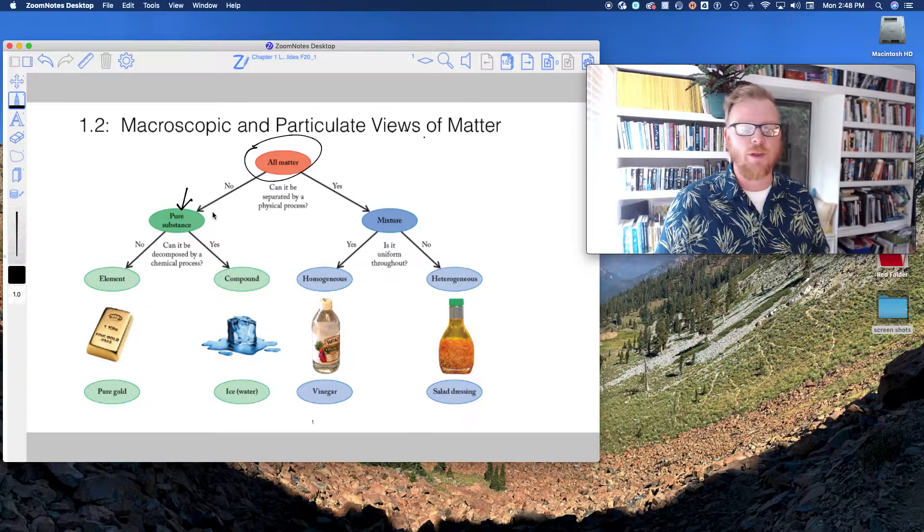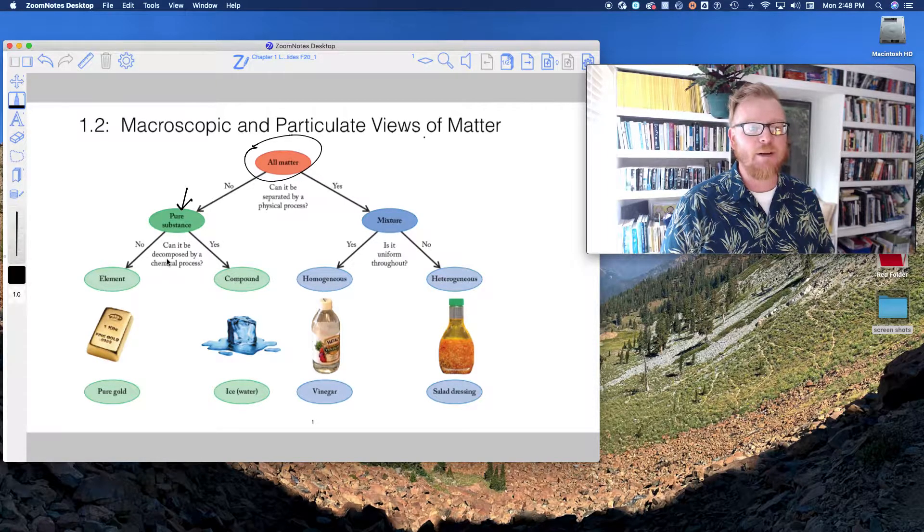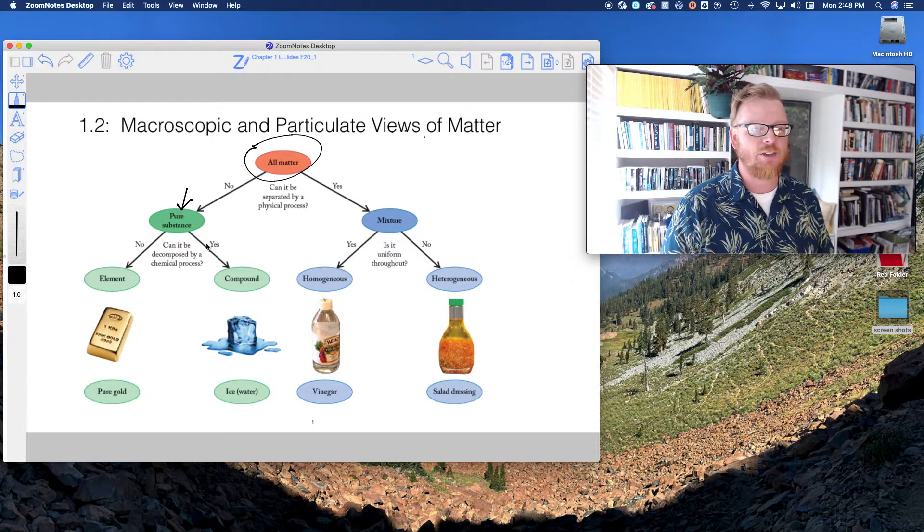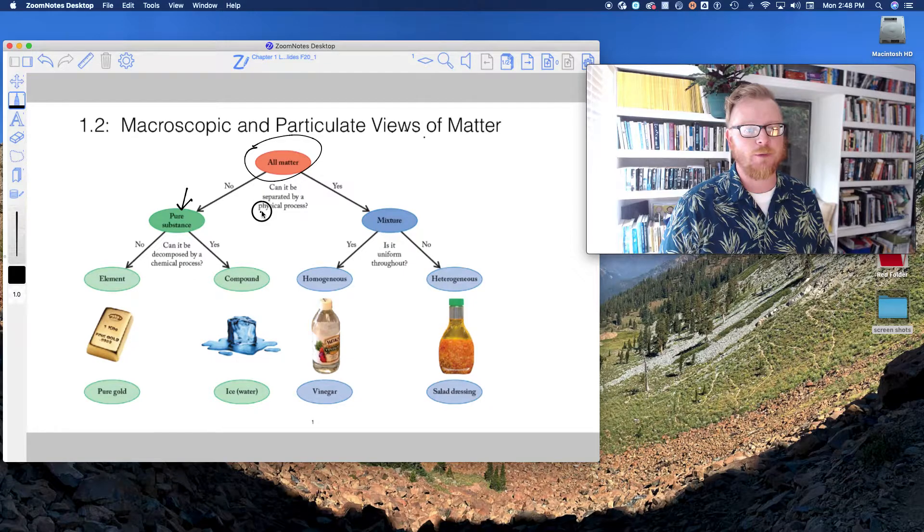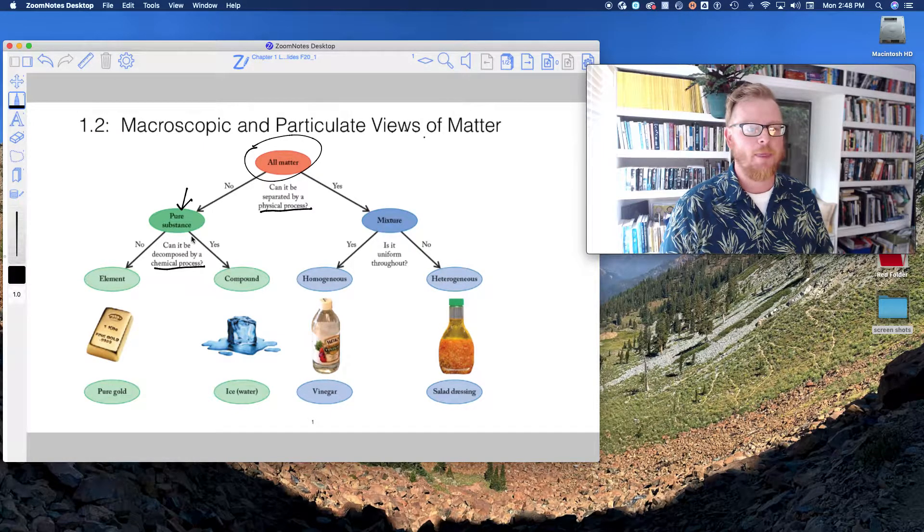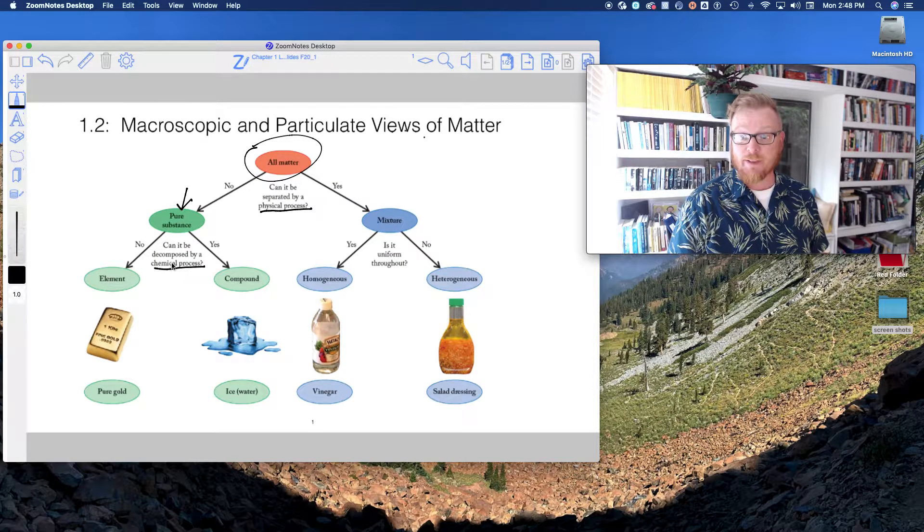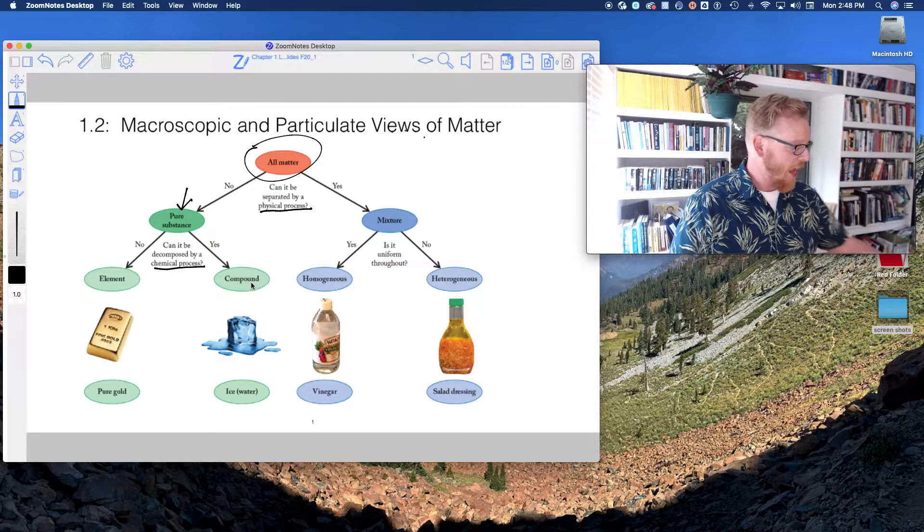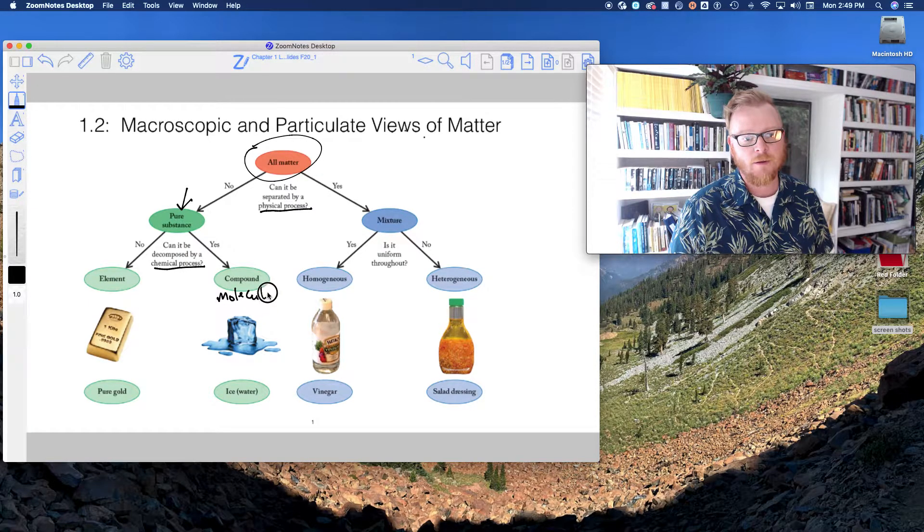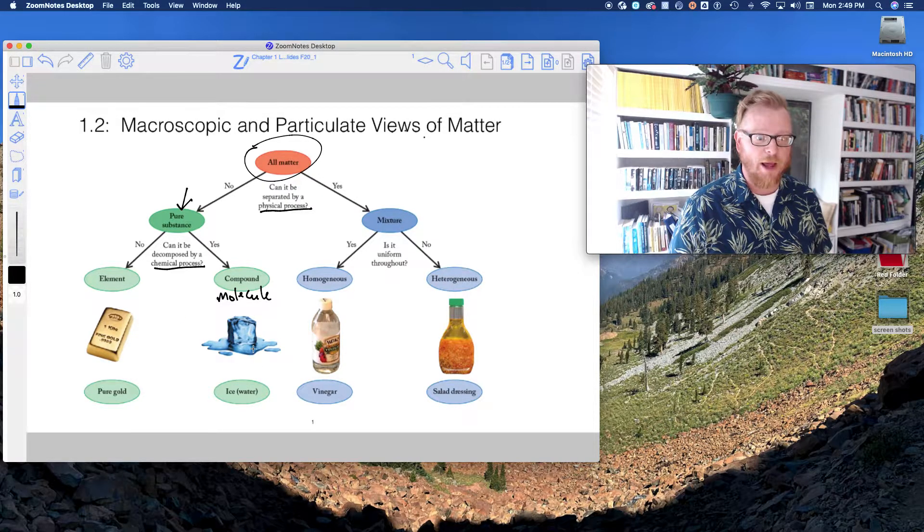Can it be separated by a physical process? If no, this tells us it's a pure substance. And that doesn't mean that we stop there. We could then ask another question: can it be decomposed by a chemical process? We're gonna have to get into understanding these differences between physical processes and chemical processes. If we answer this question yes, if it's a pure substance and can be separated by a chemical process, then it is a compound. Another thing that we could call that would be a molecule.